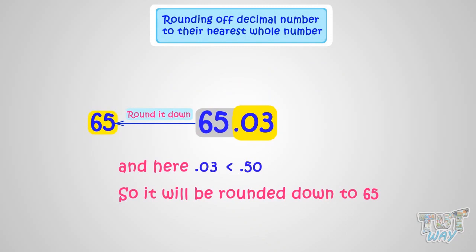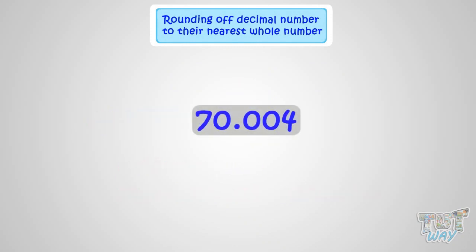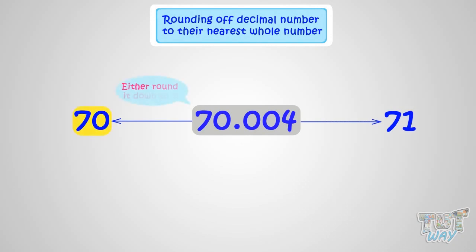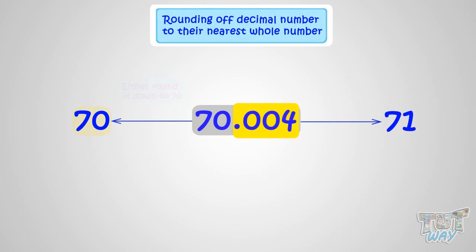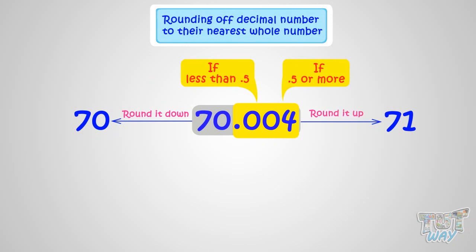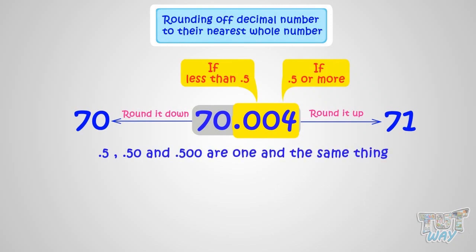Now let's take another example. We have the number 70.004. We know this number is somewhere between 70 and 71. It can be either rounded down to 70 or rounded up to 71. For that, we have to see the decimal portion, which is 0.004. If it's less than 0.5, it will be rounded down; otherwise rounded up. Kids, 0.5, 0.50, and 0.500 are one and the same thing. We can clearly see that 0.004 is less than 0.500, so the number will be rounded down to 70.